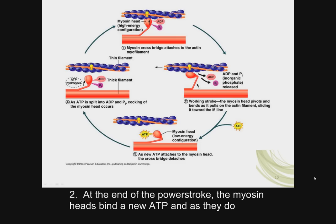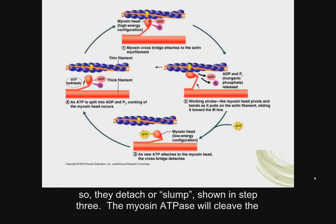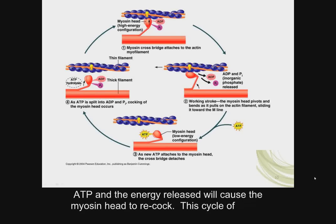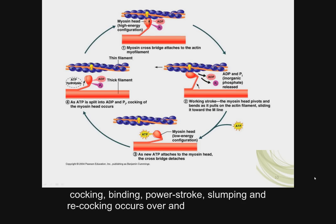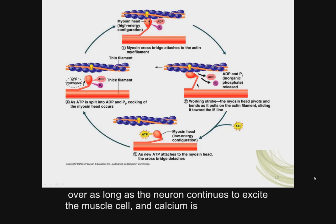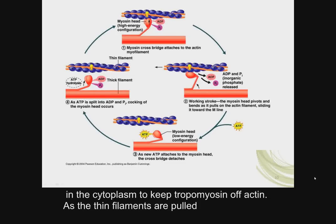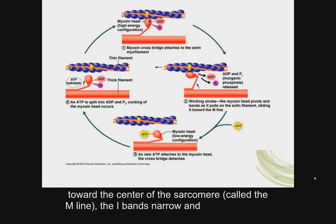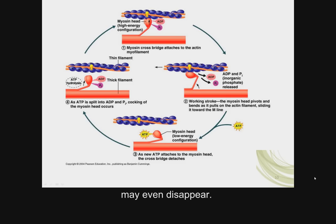At the end of the power stroke, the myosin heads bind a new ATP and as they do so, they detach or slump — shown in step 3. The myosin ATPase will cleave the ATP and the energy released will cause the myosin head to re-cock. This cycle of cocking, binding, power stroke, slumping, and re-cocking occurs over and over as long as the neuron continues to excite the muscle cell and calcium is in the cytoplasm to keep tropomyosin off actin. As the thin filaments are pulled toward the center of the sarcomere, called the M line, the I bands narrow and may even disappear.